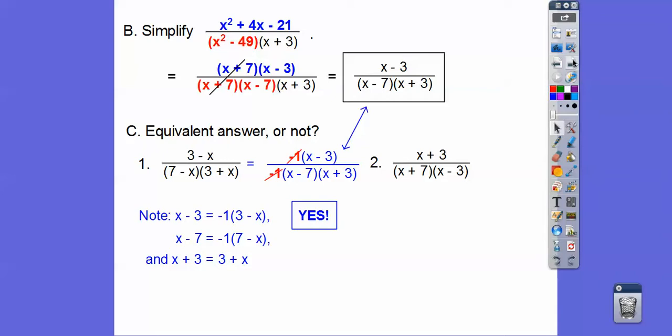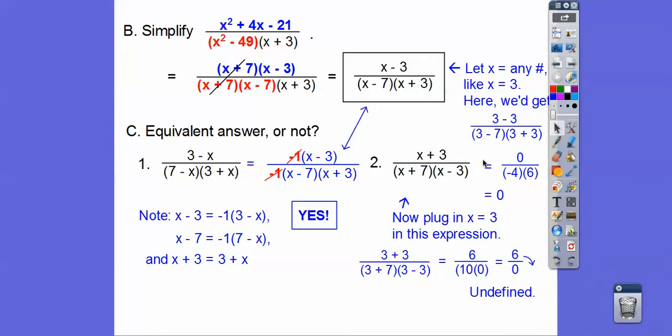How about this one? Now this one's a no, and I'm going to show you by doing an example. I'm going to plug in x equals a number, and you can choose any number you want. I chose 3. Plug in x equals 3 into this expression. So 3 minus 3, 3 minus 7, 3 plus 3. We end up getting 0, because 0 over any number equals 0. Now plug the same x equal number into this. And if it gives you the same expression, then yes, but it won't. It's going to give us 0 in the denominator, which is an undefined number.